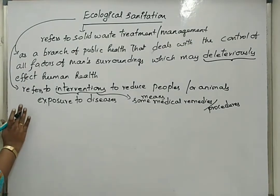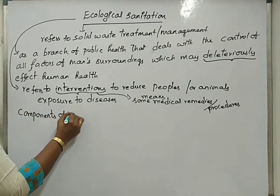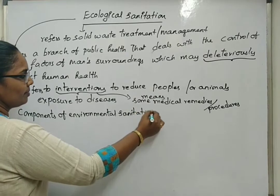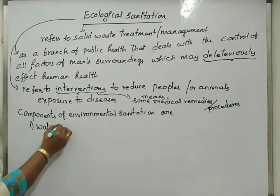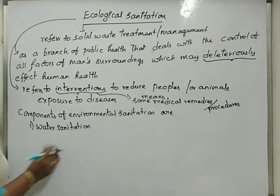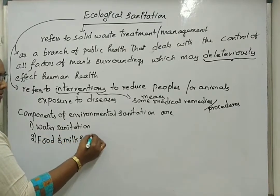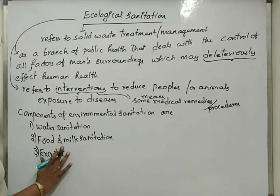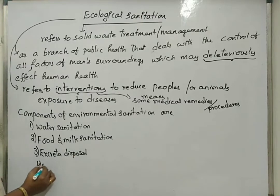Now the components of environmental sanitation: the first component is water components of environmental sanitation, mostly cleaning of wastewater. Second is food and milk sanitation. Third is excreta disposal. Fourth is sewage disposal.